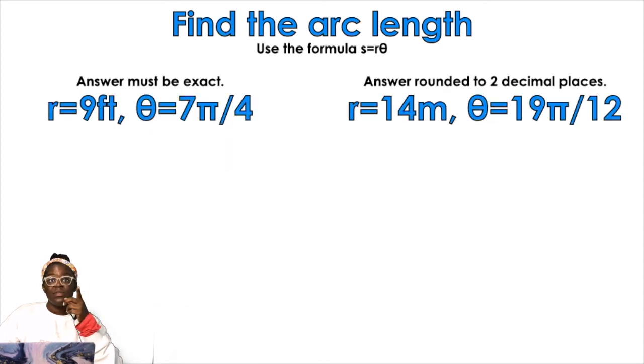Okay, two more examples. The first one must be exact, the second one needs to be rounded to two decimal places. You should try this one by yourself. Notice it's already in radians. Don't we love that? I don't even have to convert. So we're just going to multiply the radius times theta.